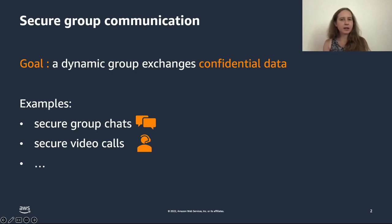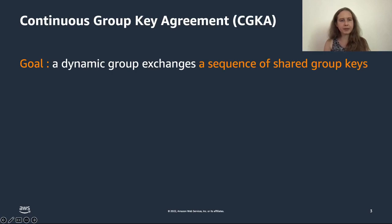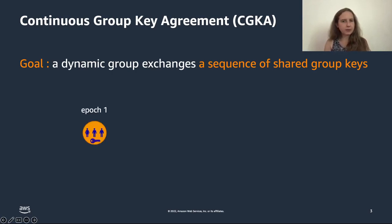The core primitive that enables secure group communication is something called continuous group key agreement, or CGKA. Here the goal is for a dynamic group of parties to agree on a sequence of shared symmetric group keys. The way to think about CGKA executions is that they create a sequence of epochs — an epoch is simply a period of time when the group has a fixed set of properties: a fixed set of members, a fixed shared key, etc.